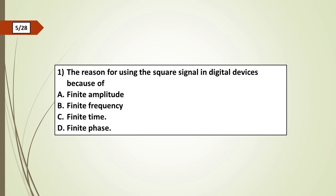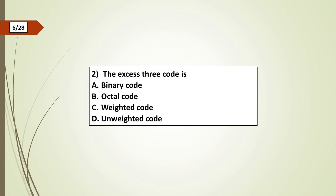First question: The reason for using discrete signal in digital devices because of: a) finite amplitude, b) finite frequency, c) finite time, d) finite phase. Second question: The Excess 3 code is: a) binary code, b) octal code, c) weighted code, d) unweighted code.